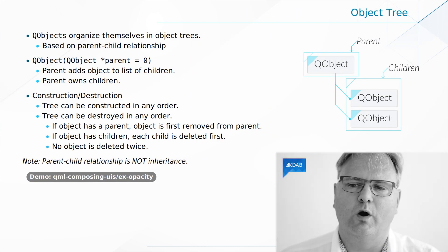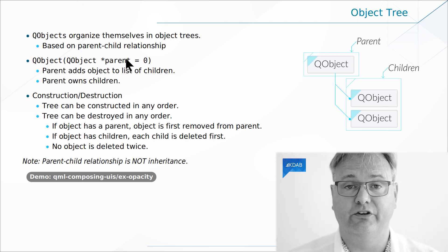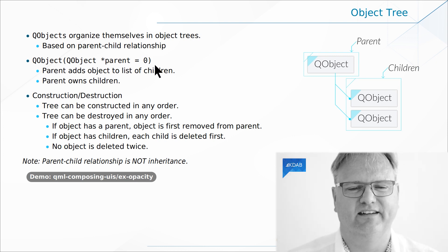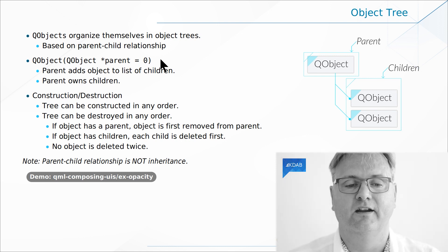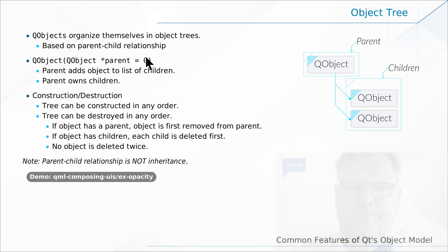The memory model with QObject basically goes like this: whenever you create a new QObject, you give a pointer to another QObject that is its parent. The slide here is slightly outdated because it says `QObject* parent = 0`, which should of course say `QObject* parent = nullptr` since it's just a pointer. Whenever the parent is deleted, it will run through its list of children given to it at construction time and delete all of them.